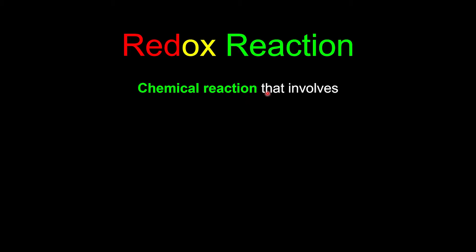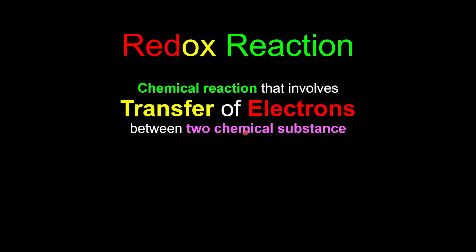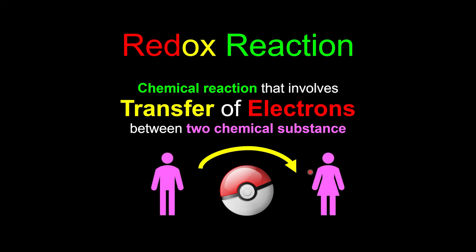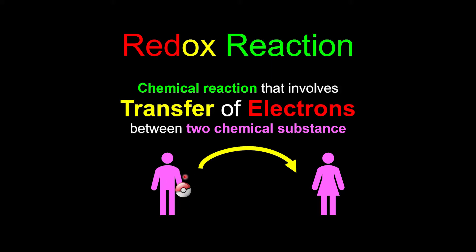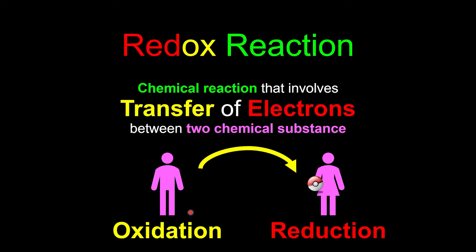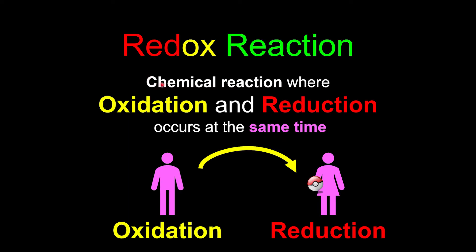What is a redox reaction? A redox reaction is basically just a chemical reaction that involves the transfer of electrons between two chemical substances. We can illustrate a transfer of electrons between two chemical substances: initially, the electron is owned by the first chemical substance. After the redox reaction, this electron is removed from the first substance to the second. Whoever loses the electrons undergoes oxidation, and whoever gains the electrons undergoes reduction. This is why redox reaction is described as a chemical reaction where oxidation and reduction occur at the same time.